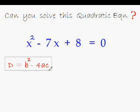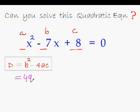I will put it down and as you already know that this is your a, this is b and this is c. So b squared is negative 7 squared that is positive 49. And minus 4ac would be minus 4 times 1 is minus 4 times 8 is minus 32. 49 minus 32 is 17.